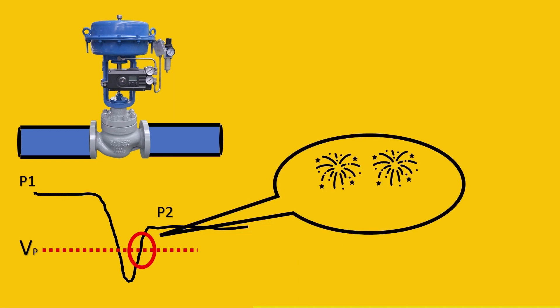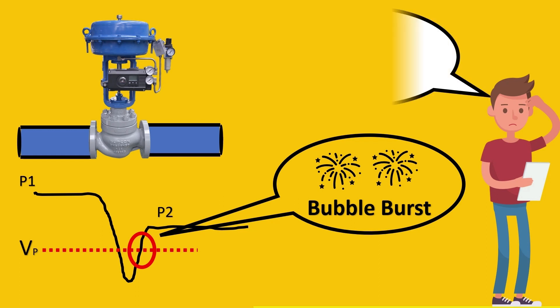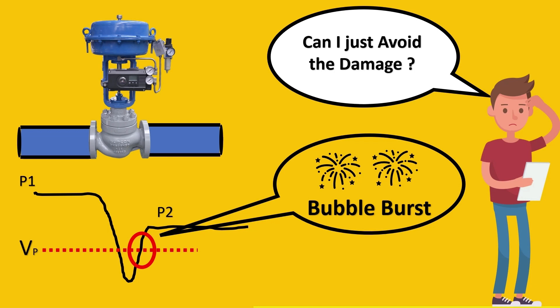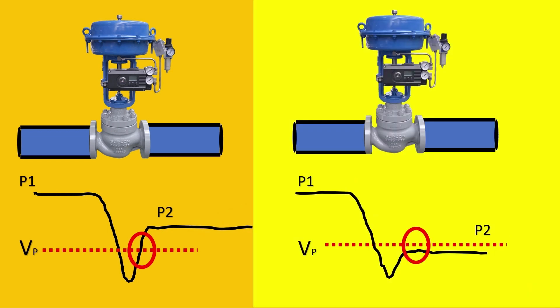Engineers have realized that at this portion when the liquid or the fluid is changing into its liquid state, the bubbles are going to burst, which is the most harmful thing to the valve. So engineers thought, can we just avoid this one thing? Can I just avoid this damage? Yes, that is possible. At this stage we don't allow it to come to its liquid state, so the bubbles won't burst.